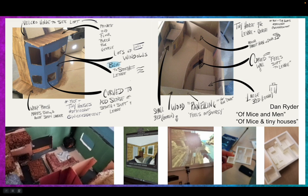Dan Ryder's class read Of Mice and Men and he wanted to do something different — it was going okay but not having the impact and meaning he wanted. So they came up with the idea that kids had to design a tiny house and make a model that fit the needs of the men in the book. They had to use snippets from the book to validate what they put in their tiny house. He brought in people from the construction industry to talk about ideas and methods, and touched on economics — what would this cost? Some kids 3D printed; others made it out of cardboard. Again, it's about the conversations you can have.